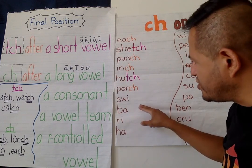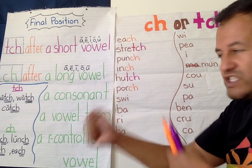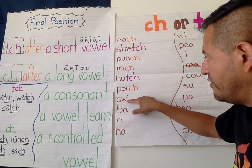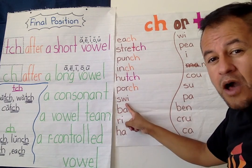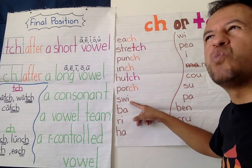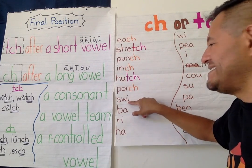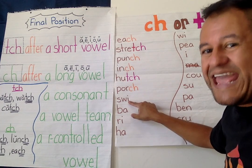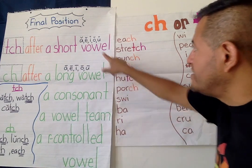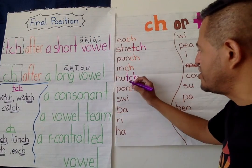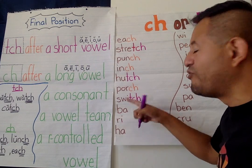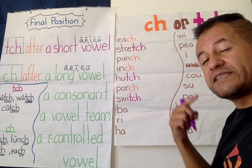"Switch" — we're going to switch sides or switch teams. SW-I. Now I know it's a vowel; I'm going to listen carefully for the sound. It could be "swiche" — but I've never heard of a "swiche" before. It's not saying its name, so it's a short vowel. Short vowel is going to bring me to T-C-H.